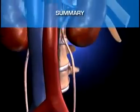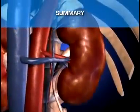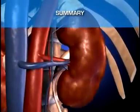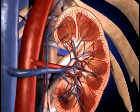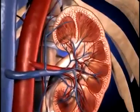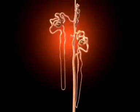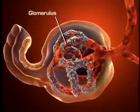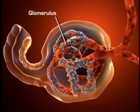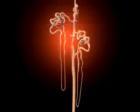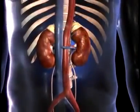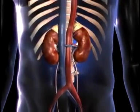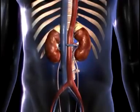The kidneys perform an excretory function by filtering the blood and then selectively reabsorbing those materials that are needed to maintain a stable internal environment. The nephron is the functional unit of the kidney and is composed of a glomerulus, which filters the blood, and a tubular component, where necessary substances are reabsorbed into the bloodstream and unneeded materials are secreted into the tubular filtrate for elimination in urine.